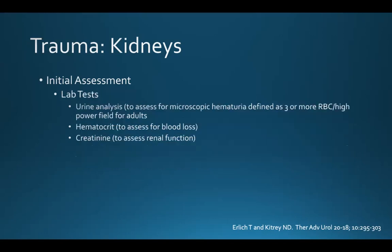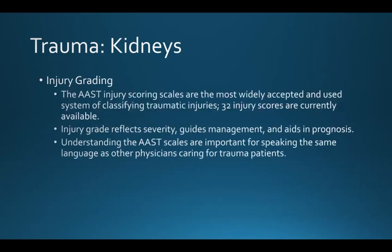Labs are usually obtained. A urinalysis is good for assessing microscopic hematuria. You want to get a crit to assess for blood loss and a creatinine to assess renal function. Grading of the injury is important in renal trauma because it reflects severity, guides management, and aids in prognosis.